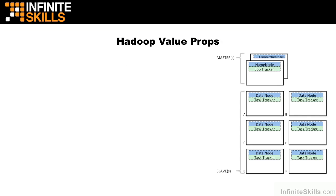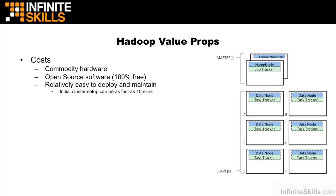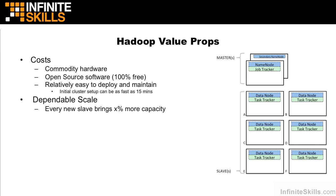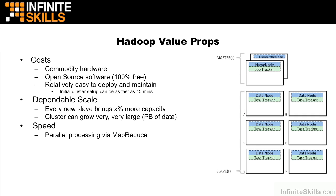Hadoop has several value propositions. First, cost: open source software running on commodity hardware is incredibly cheap, and it's very easy to deploy and maintain — you can get up and running in as fast as 15 minutes. It has very dependable, horizontal, linear scale: every slave added to the cluster gives some percentage more capacity. In a six-slave cluster, adding six more slaves doubles capacity for both storage and processing. Clusters can grow to store petabytes of data and process thousands of tasks simultaneously. Hadoop is relatively quick, providing parallel processing via MapReduce, with fail-safes including redundancy, fault tolerance, and self-healing.